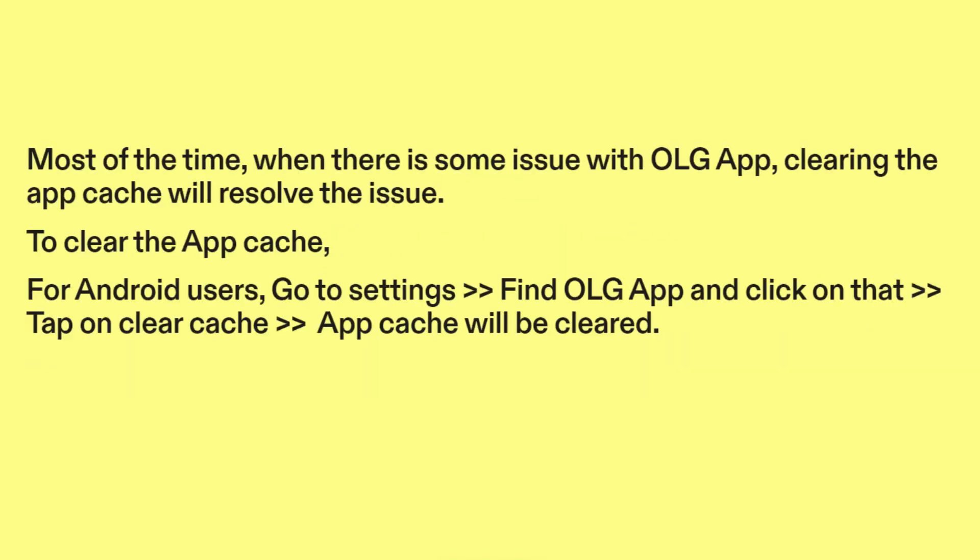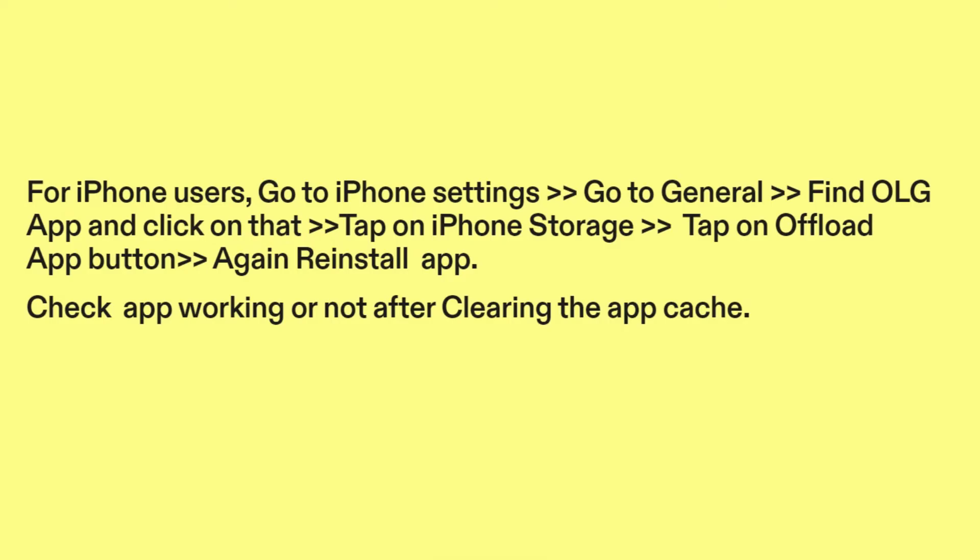Fix four: clear app cache. Most of the time, clearing the app cache will resolve the issue. For Android users, go to Settings, find the OLG app, click on it, and tap on Clear Cache. For iPhone users, go to iPhone Settings, go to General, find the OLG app, tap on iPhone Storage, tap on Offload App, and then reinstall the app. Check if the app is working after clearing the app cache.